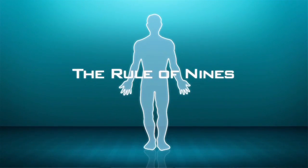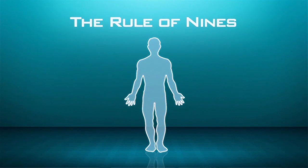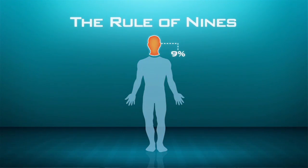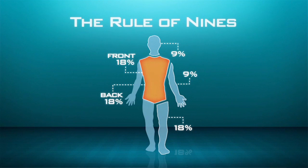Basically, the body is divided into parts divisible by the number nine. The head and neck is equal to about 9% of the total body surface area. The arm is equal to about 9% total body surface area. The leg is equal to 18% total body surface area. The chest and anterior trunk is 18%, and the back and buttocks area is about 18%.